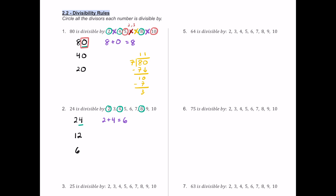Is 6 a multiple of 3? Yes, so we circle 3. Is 6 a multiple of 9? No, because it's smaller, so 9 fails. The number doesn't end in 5 or 0, so 5 and 10 don't work. For 6: it works for both 2 and 3 in this problem, so we circle 6. For 7: 3 times 7 is 21 with a remainder of 3, so 7 doesn't work. The divisors that work for 24 are 2, 3, 4, 6, and 8.